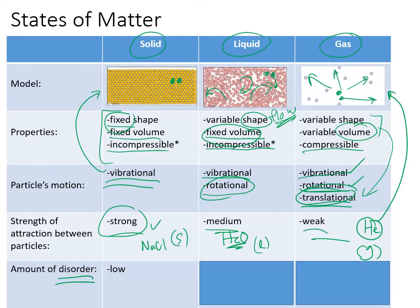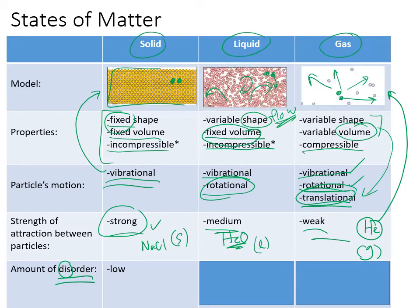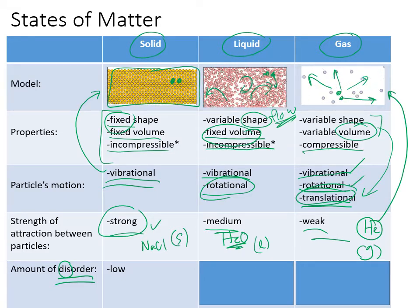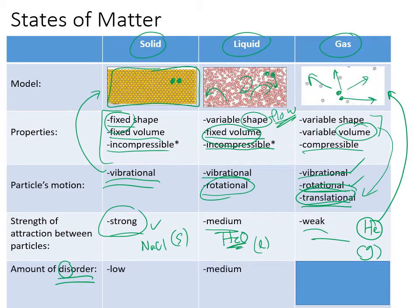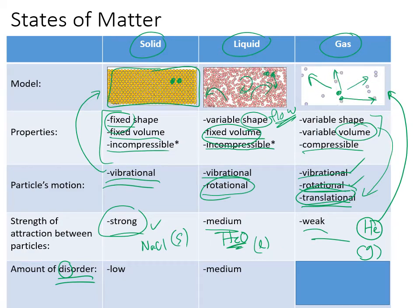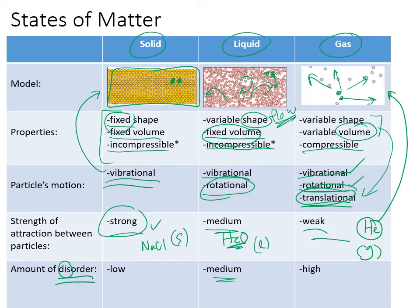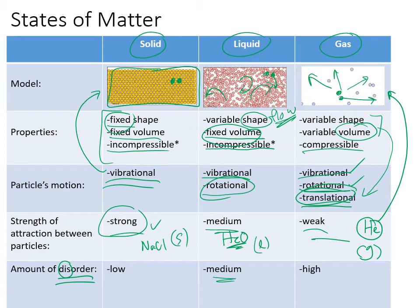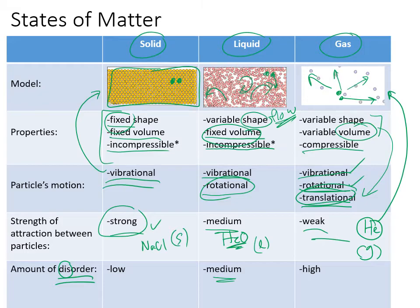In terms of disorder, it's useful to think about how disorganized each state is. A solid has very low disorder — each particle has its spot and stays there. Liquids have a medium level of disorder — they can move to quite a few places but not freely everywhere. Gases have a very high amount of disorder because the particles can move anywhere and there are many possible positions for them to occupy.